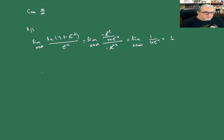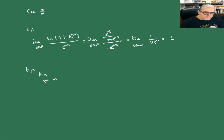Ejemplo 2: vamos a hacer tres ejemplitos nada más de esto. El límite cuando x tiende a infinito de 2x cuadrado sobre x cúbico más 3 — en los dos casos tenemos divergencia.